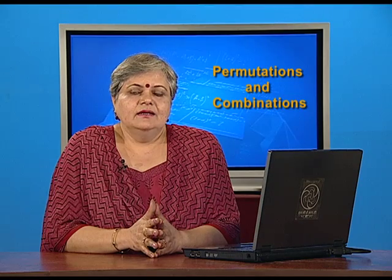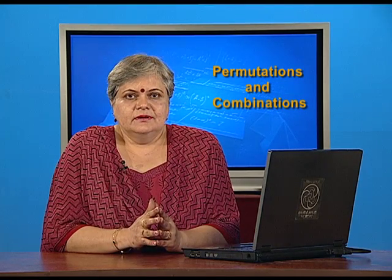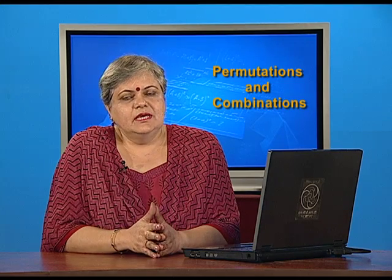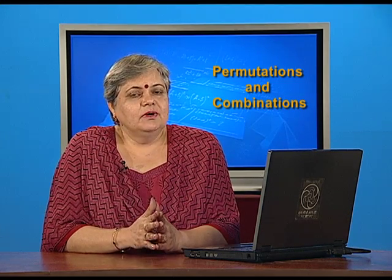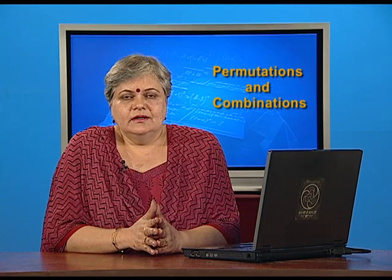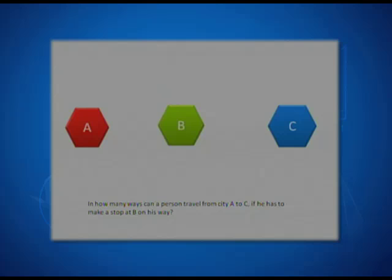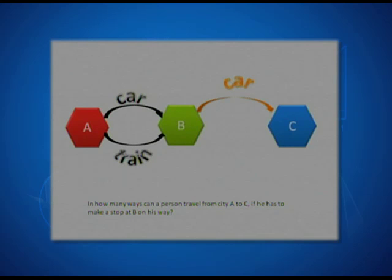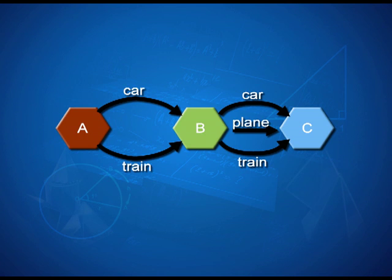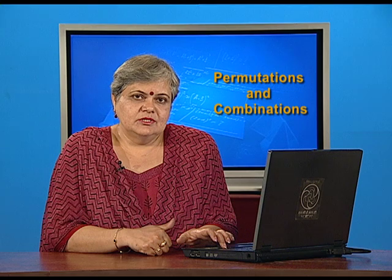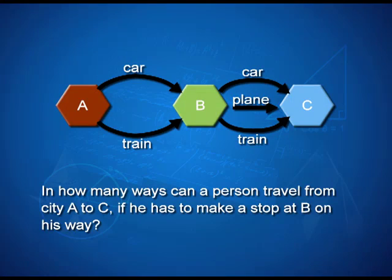To understand that, let us start with a simple example. Suppose a person is travelling from city A to city C and he has to make a stopover in city B. In how many ways can he do so? From city A to city B, he can travel either by car or take a train, whereas from city B to city C, he has 3 options: he may go by car, travel by train, or use a plane. What are the number of ways in which he can make this journey from A to B and then B to C?